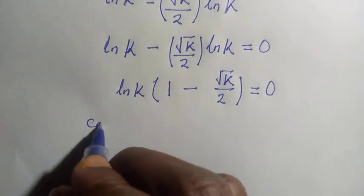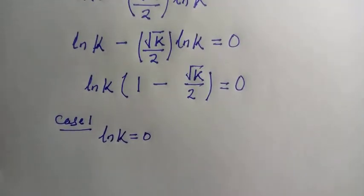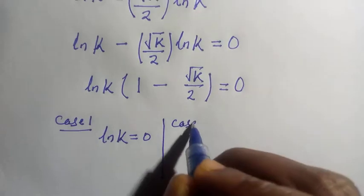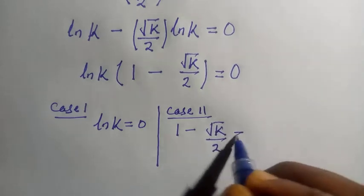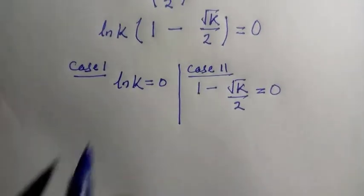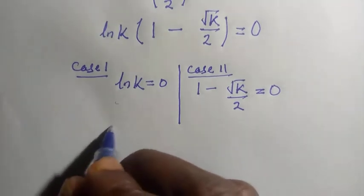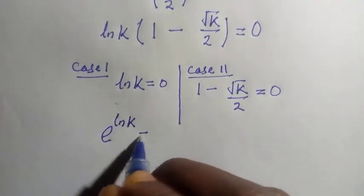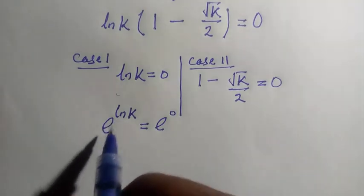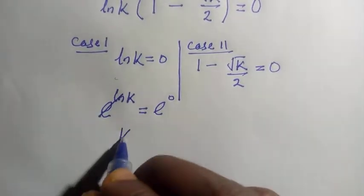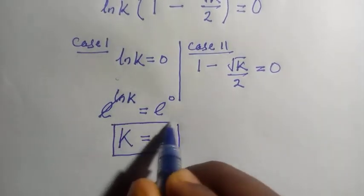So we let ln k equals 0, or we let 1 minus square root of k divided by 2 equals 0, to get the value of k. In the first case, ln k equals 0. To get the value of k, we introduce the exponential to both sides: e to the power of ln k equals e to the power of 0. Since exponential and ln are inverse to each other, they cancel, so that we have k equals 1. And here is the first solution to this problem.